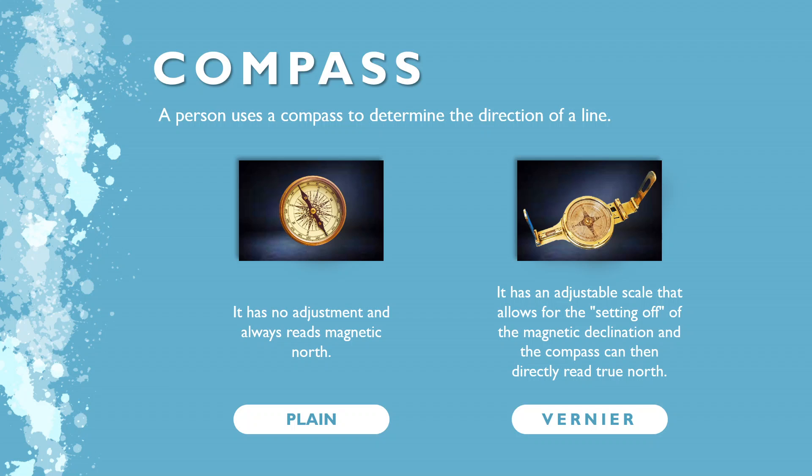A person uses a compass to determine the direction of a line. The compass needle points to the magnetic north pole; by turning the compass in the direction of the line being surveyed, the direction of the line can be observed. Although there are many varieties of compasses, they all fall into two main categories: a plain compass and a bearing compass. A plain compass has no adjustment and always reads magnetic north, while a bearing compass has an adjustable scale that allows for setting the magnetic declination so the compass can then directly read true north.